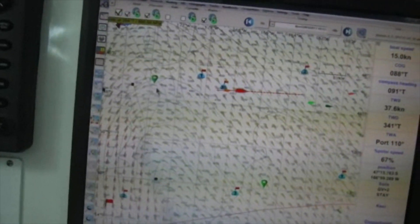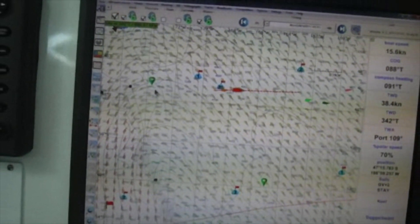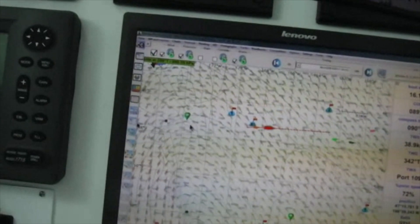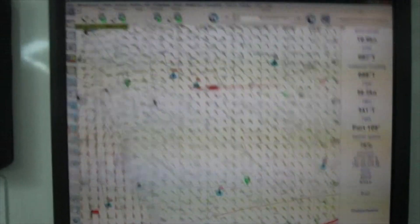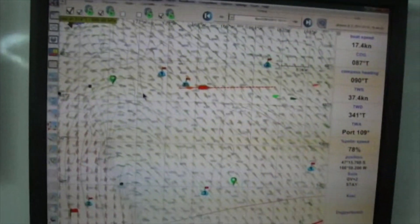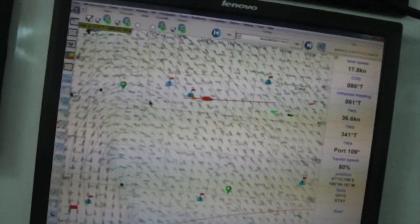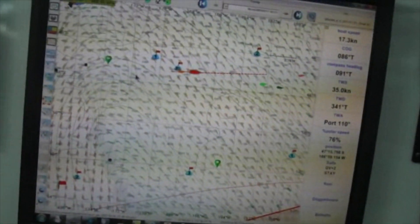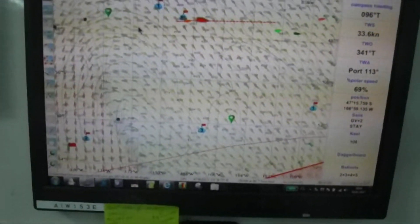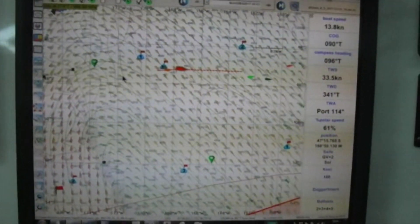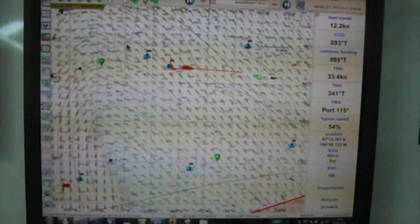And in the middle of that, we'll tack to get on the other jibe, so that when this comes along, we'll be able to go on starboard jibe. We're on port jibe right now. And we have now three reefs in the mainsail with the storm jib up, and we're taking the wind about 110 degrees off the port side from the bow. So that's kind of what's going on.